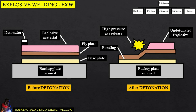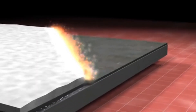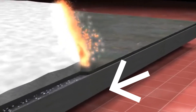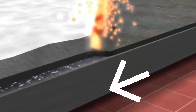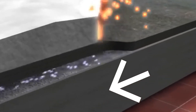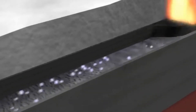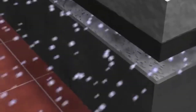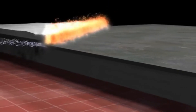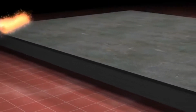A jet of highly softened metal is formed at the collision front and is projected in front of it as it progresses rapidly across the weld interface. As the jet progresses, it thoroughly cleans the surface, thus permitting solid phase bonding to occur between the two materials.